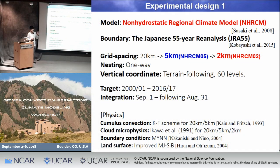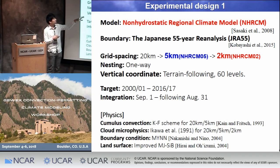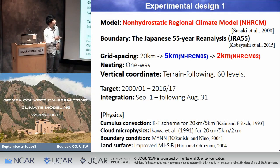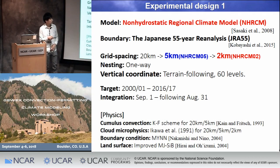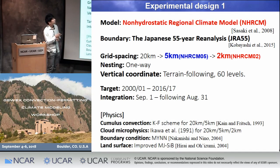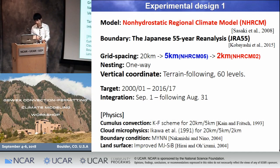This is the experimental design for the first topic. We use the non-hydrostatic regional climate model developed by the Meteorological Research Institute, with boundary conditions from the Japanese 55-year reanalysis data, JR55. The grid spacing ranges from 20 kilometer, 5 kilometer, and 2 kilometer. In this presentation we compare the 5 kilometer and 2 kilometer simulations. The target period is 2000 to 2016. Cumulus convective parameterization is applied to the 20 kilometer and 5 kilometer runs, while for the 2 kilometer simulation, precipitation processes are only calculated by cloud microphysics.